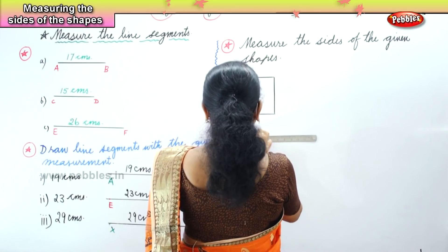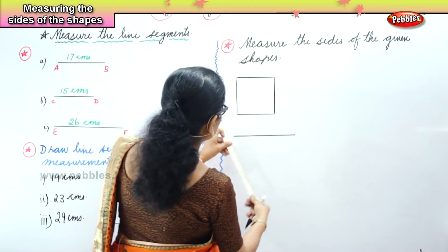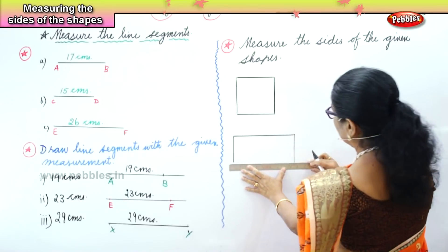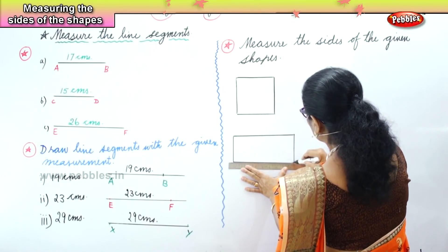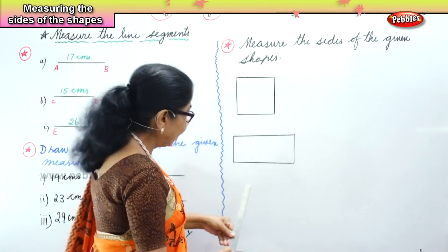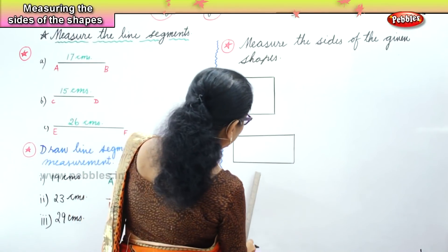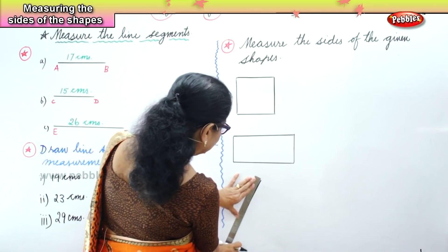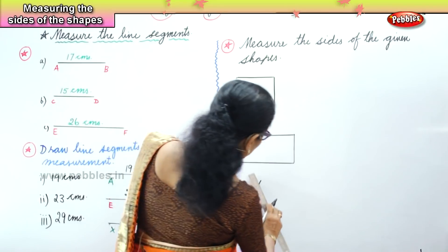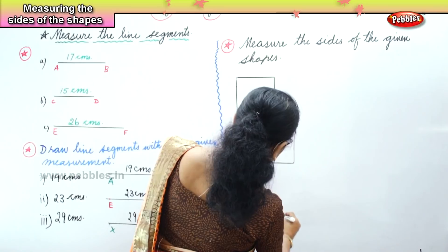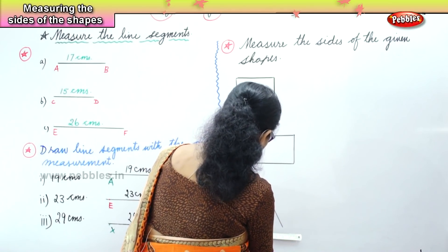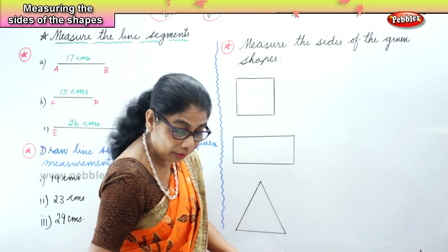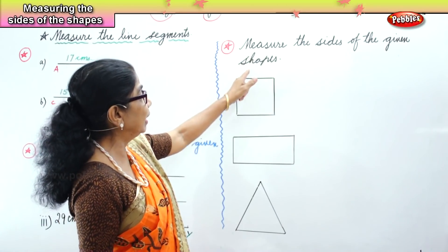Then I have another shape for you. We have two shapes now, and one more shape to measure. Our square, we have a rectangle, and here we have a triangle to measure the size. Now we have three shapes here. Measure the size of the given shapes.